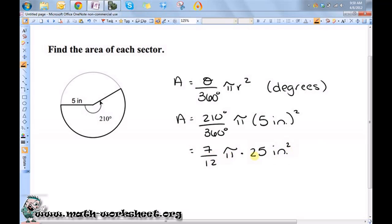7 times 25 is 175, so this would be 175 over 12 pi inches squared. And once again, because this one doesn't say anything about rounding, we should leave it in its exact form.